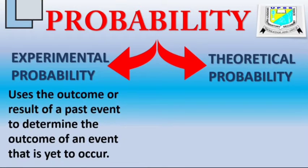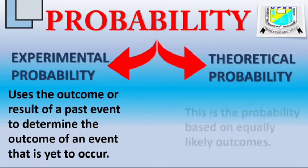For experimental probability, it uses the outcome or result of previous events to forecast or determine the results or outcome of events that are yet to occur. Now, experimental probability is not real and it's not the true assessment of probability.